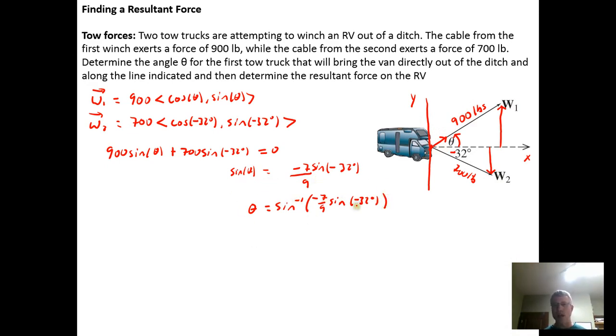We could approximate this using a calculator or GeoGebra, but we would need to make sure the calculator or GeoGebra was in degree mode or we would need to convert degrees into radians by multiplying negative 32 degrees by the ratio pi to 180 degrees. I'm not going to bother to approximate it.